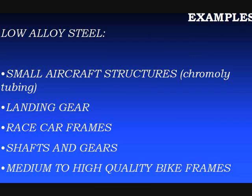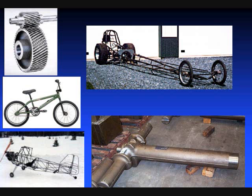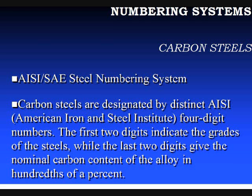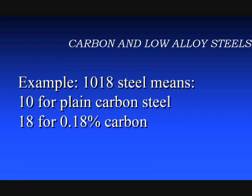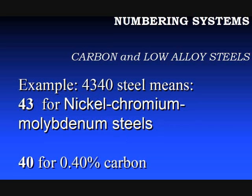Low alloy steels — the most commonly known is probably 4130 chromoly, because it's used so much in motorsports and small aircraft. But there are others like 4340 and 4140, which are low alloy steels containing carbon as well as chromium, nickel, or molybdenum mixed in to achieve certain effects. There are a lot of numbering systems, but remember this: the 18 on the end of 1018 indicates 0.18% carbon — not much. Cast iron has over ten times that. The 4340 designation indicates 0.40% carbon plus nickel, chromium, and molybdenum.